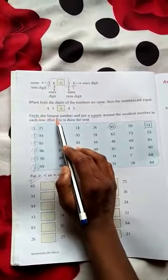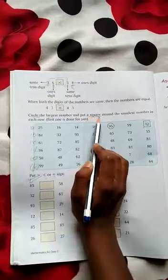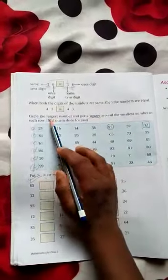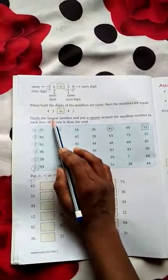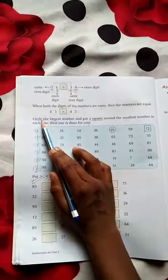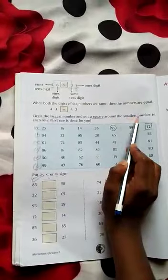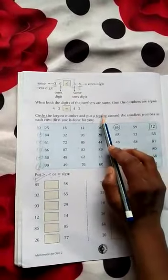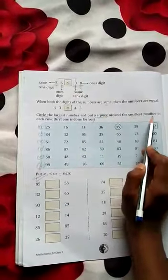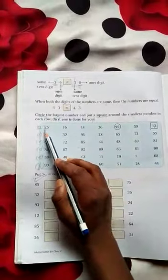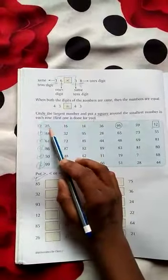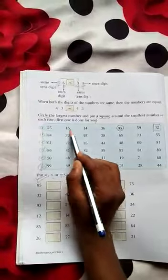Circle the largest number and put a square around the smallest number in each row. First one is done for you. Now what do we need to do? We need to look at this side.